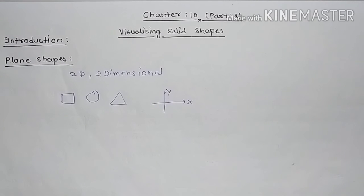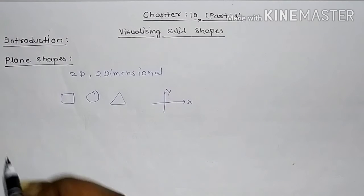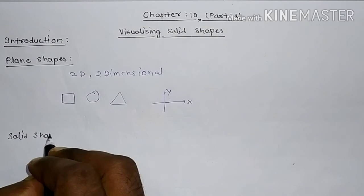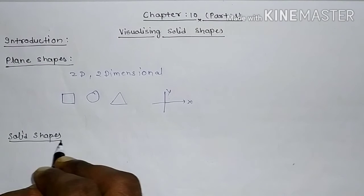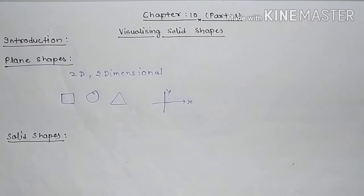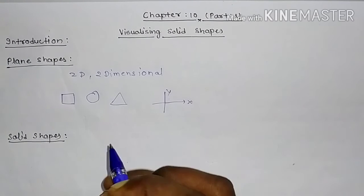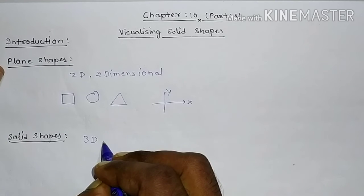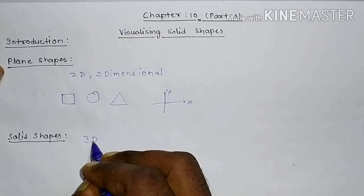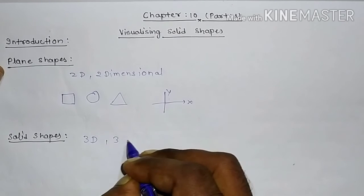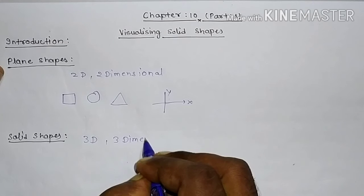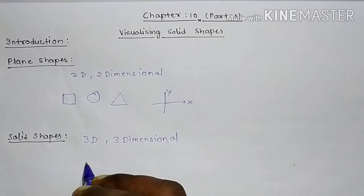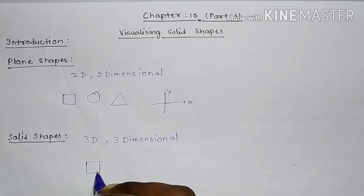Now, solid shapes — three-dimensional shapes. What are solid shapes? 3D shapes are solid shapes. 3D means three-dimensional. Three-dimensional shapes are solid shapes like a cube — just draw a cube — and a cone. These are three-dimensional shapes.